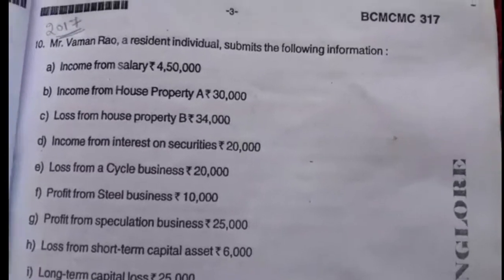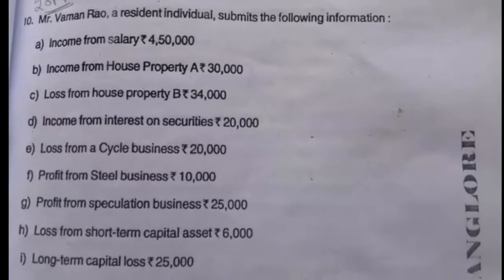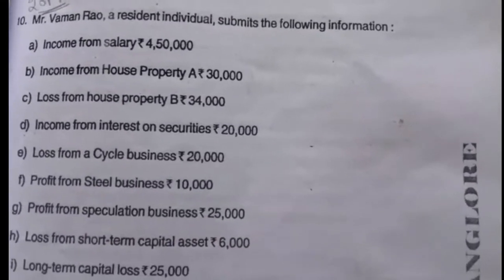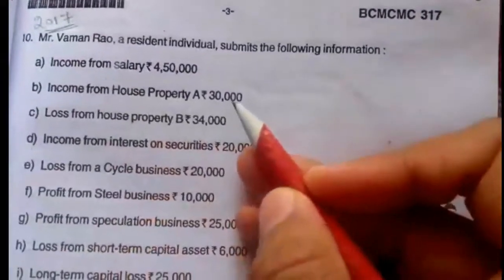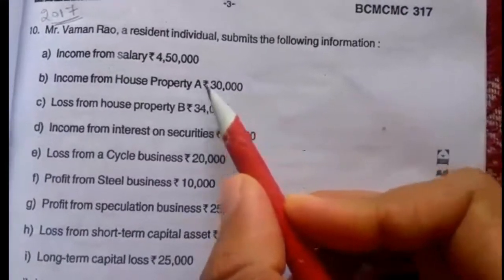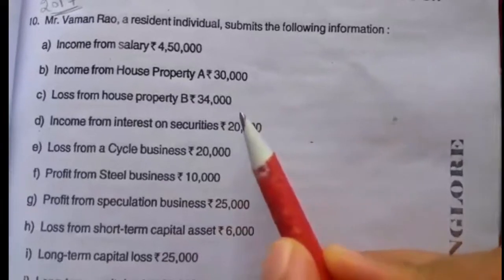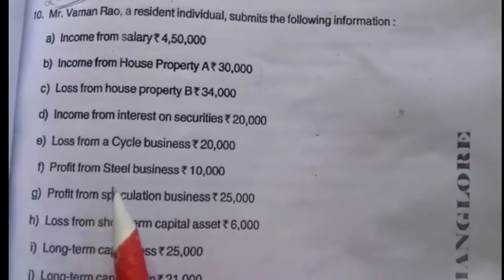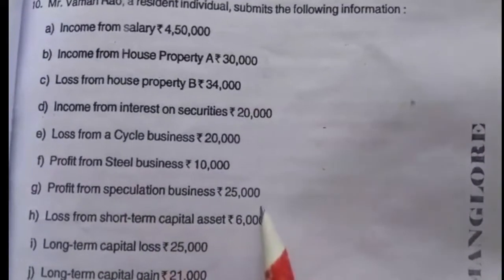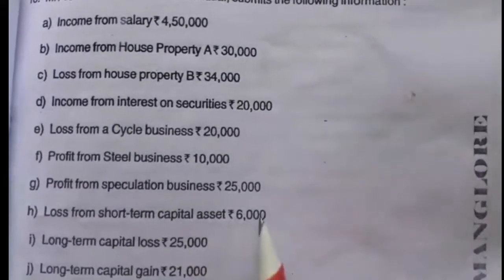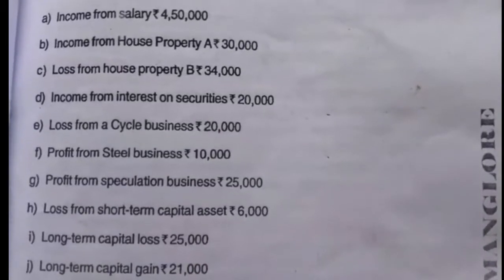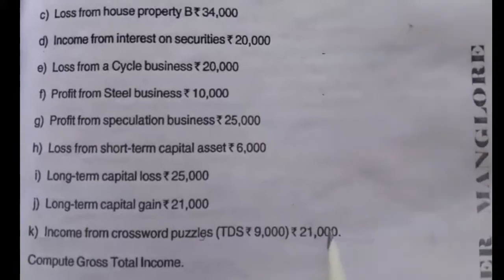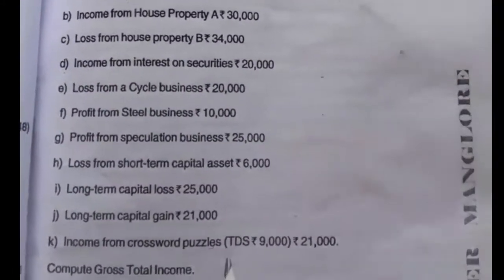Hello students, today we will learn illustration number two under set-off and carry forward of losses. This question is from the 2017 year question paper. Mr. Vaman Rao, a resident individual, submits the following information: income from salary Rs. 4,50,000; income from house property A Rs. 30,000; loss from house property B Rs. 34,000; income from interest on securities Rs. 20,000; loss from cycle business Rs. 20,000; profit from steel business Rs. 10,000; profit from speculation business Rs. 25,000; loss from short-term capital asset Rs. 6,000; long-term capital loss Rs. 25,000; long-term capital gain Rs. 21,000; income from crossword puzzles TDS Rs. 9,000 and value Rs. 21,000. Compute the gross total income.